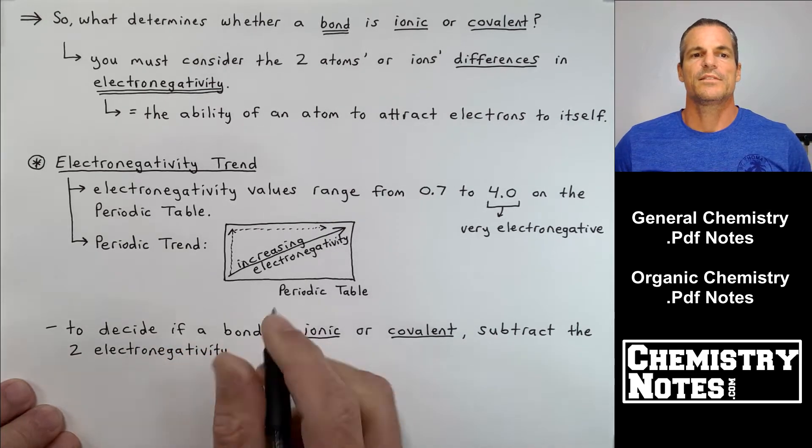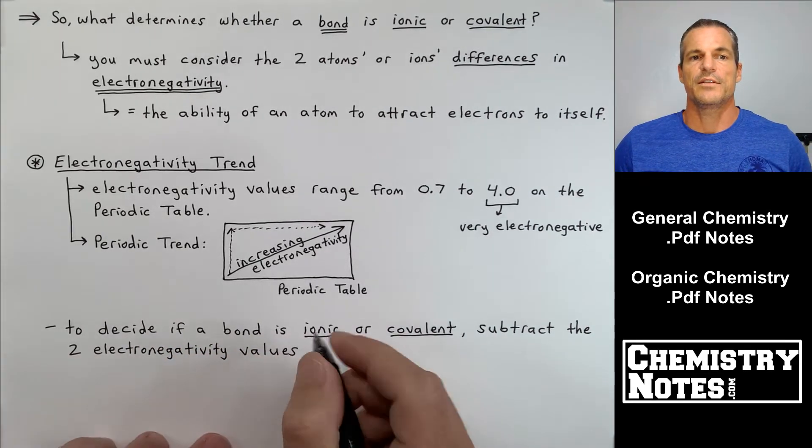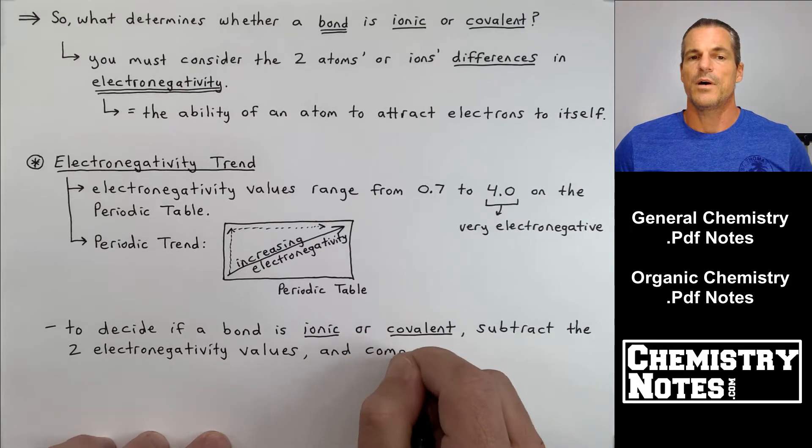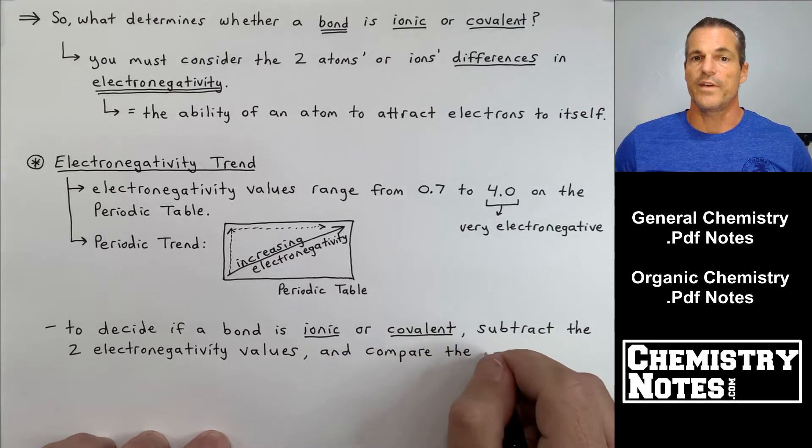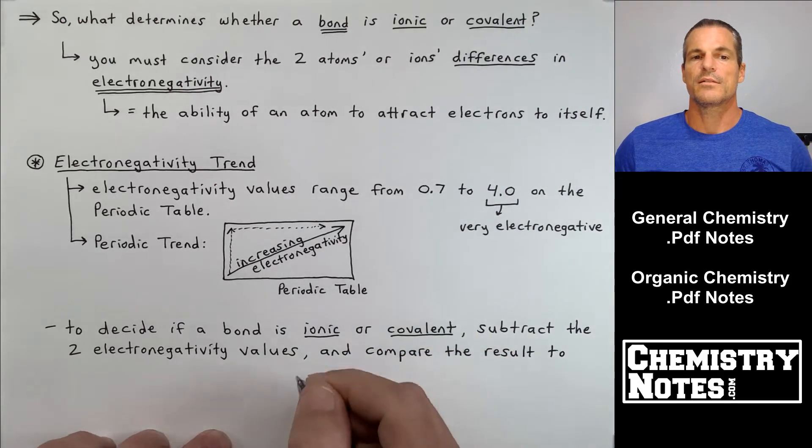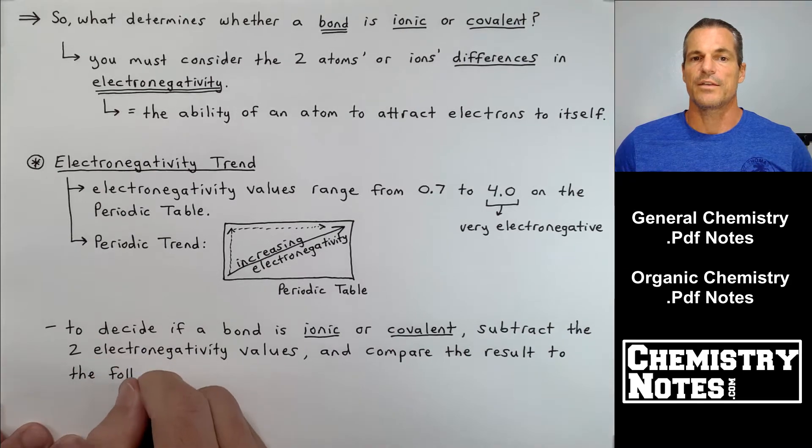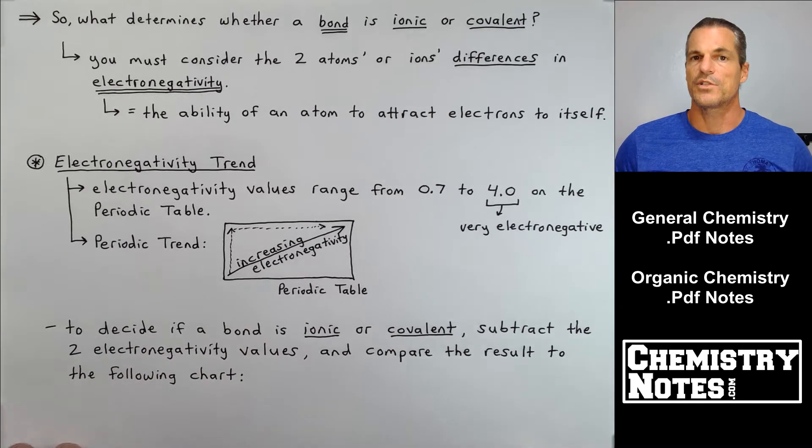So the bullet point says underneath electronegativity trend, it says to decide if a bond is ionic or covalent, subtract the two electronegativity values and compare the result to the following chart.